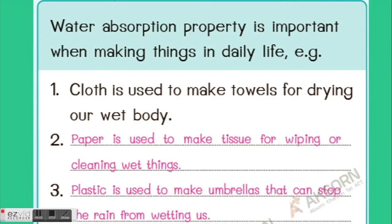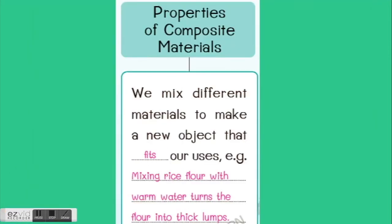Now let's go further. Properties of composite materials: we mix different materials to make a new object that fits our uses. For example, mixing rice flour with warm water turns the flour into thick lumps. Write it down if you haven't yet. Good job.